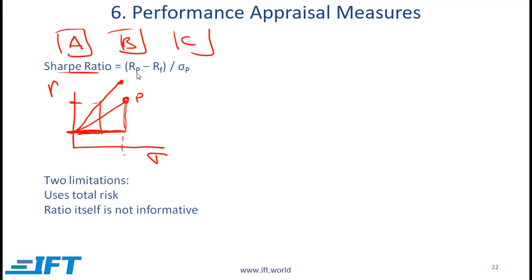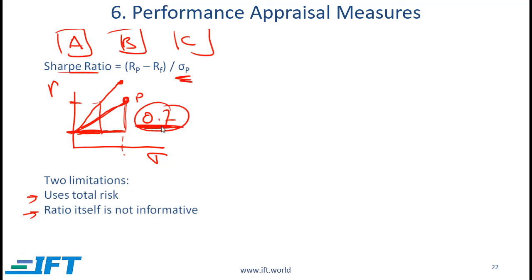The Sharpe ratio is simple to understand, simple to calculate, and used very often, but it has two limitations. One is that it uses total risk rather than systematic risk or beta. The other is that it is a ratio which is not informative in itself — if a portfolio has a Sharpe ratio of 0.7, just looking at that number you don't know whether it is good or bad. It's only when you compare it with another portfolio's Sharpe ratio, say 0.9, that you can determine which is superior.